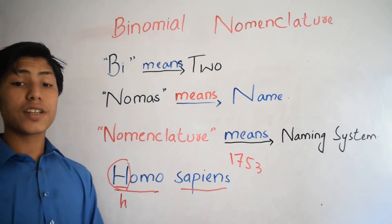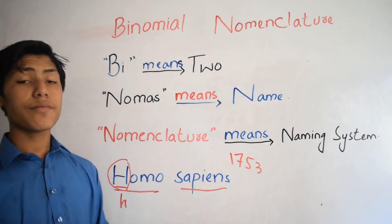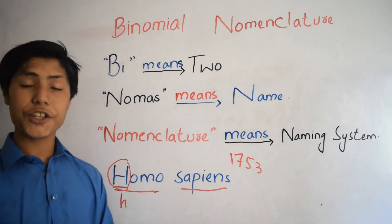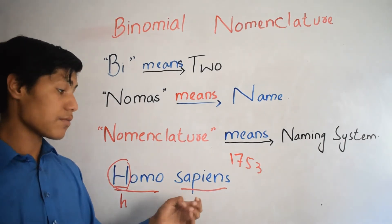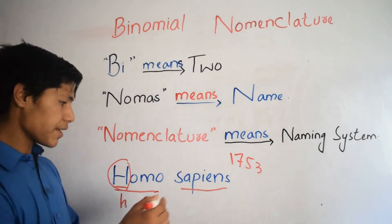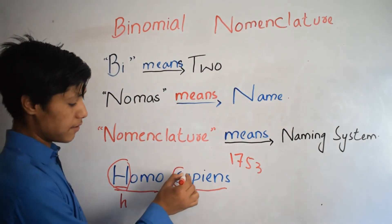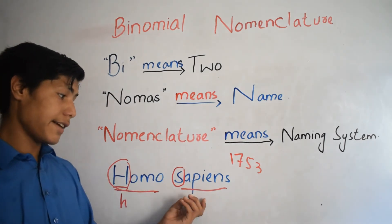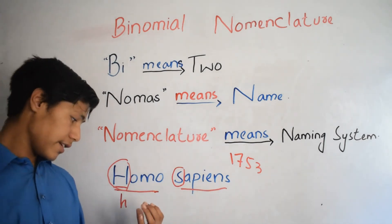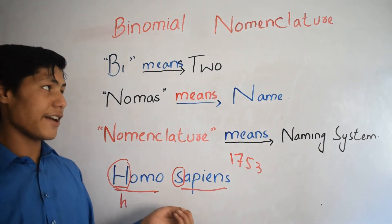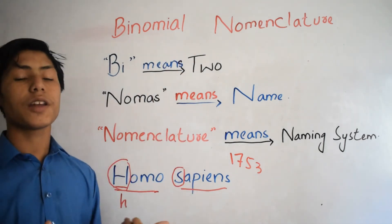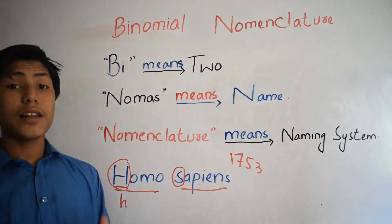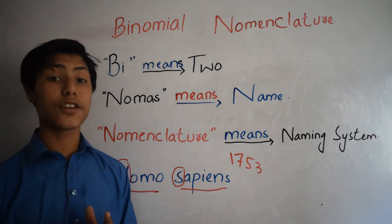The fourth rule states that the second name refers to species and it starts from a small letter. You see this is a small letter and this is the species. So genus and species combine to form the full scientific name of a human.